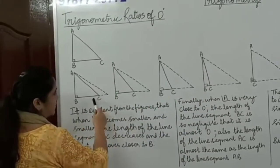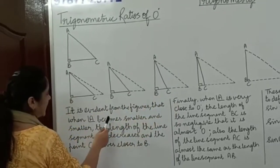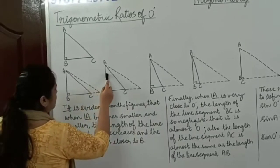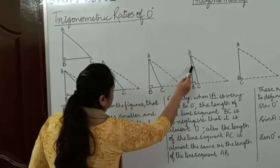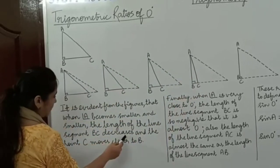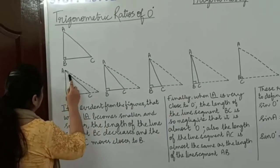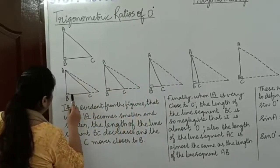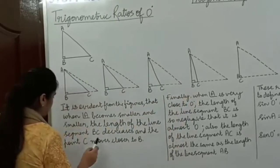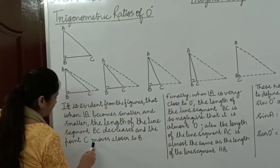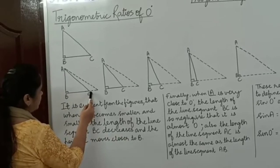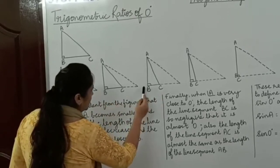It is evident from these figures that when angle A becomes smaller and smaller, the length of the line segment BC decreases. The point C moves closer to B.